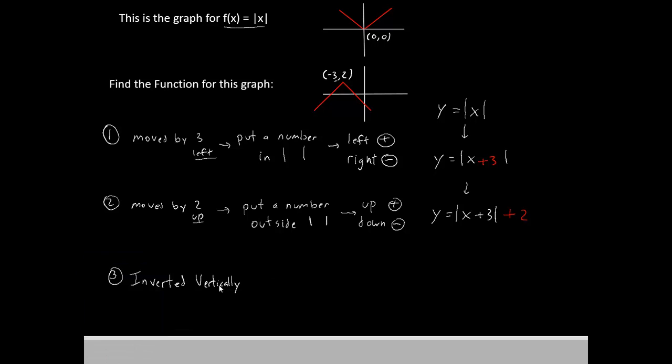Now onto the third operation. We've inverted it vertically. To invert something vertically, what you do is put a minus sign outside the pipes.